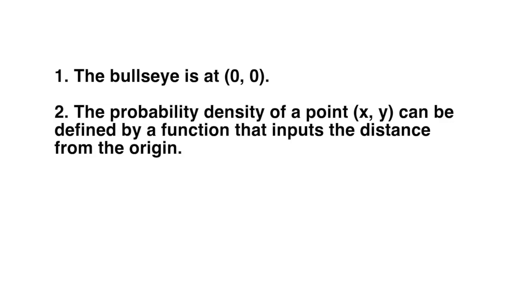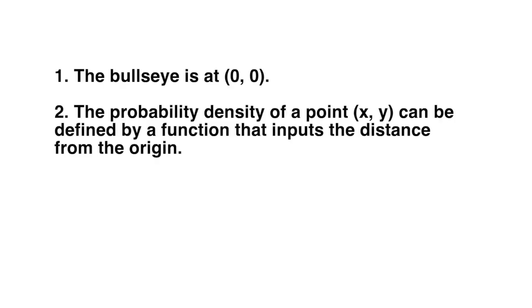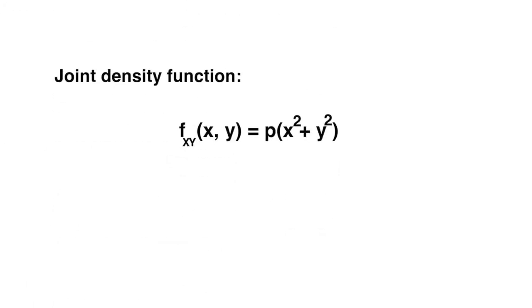We're going to assign the bullseye to the point (0, 0) and then define a probability density function that takes in the distance that a point is away from the bullseye. We don't like the square root in the function expression, so we're actually going to define a new function that takes in the square distance we are away from the origin. We're allowed to do this because we're just defining a probability density function and the relationships to the points x and y are still preserved. So now we have that p is a joint density function of x and y that takes in the square distance x² + y² from the origin.